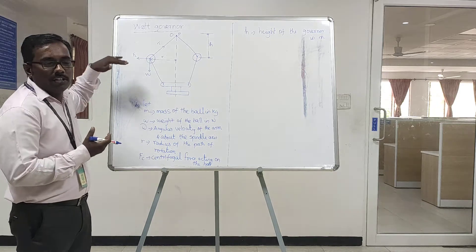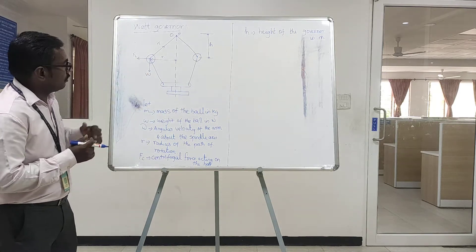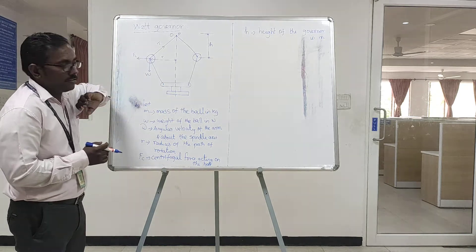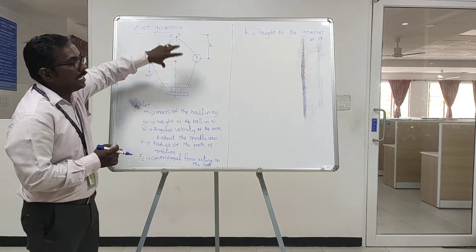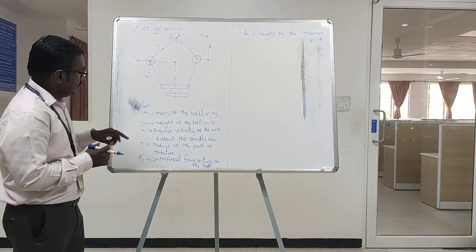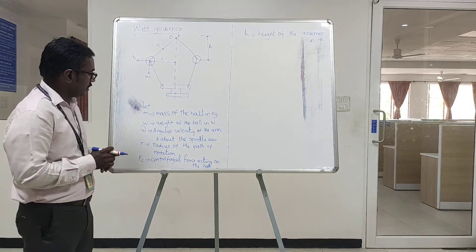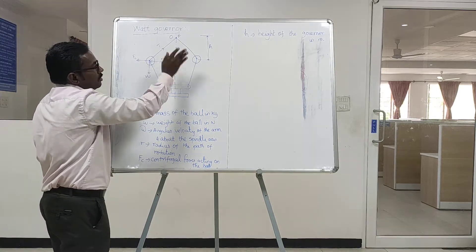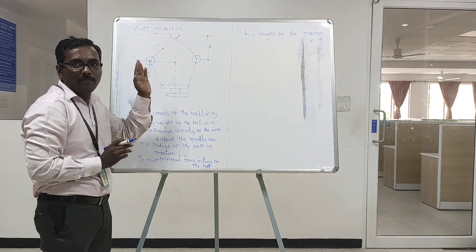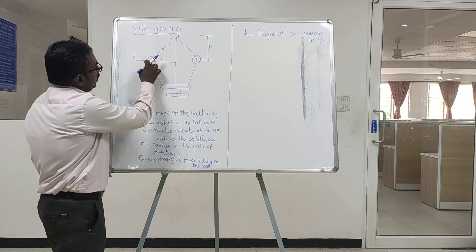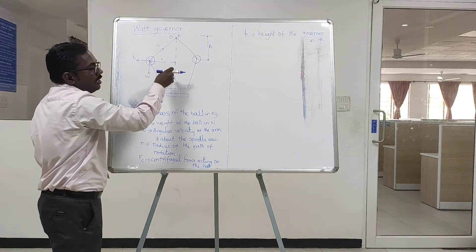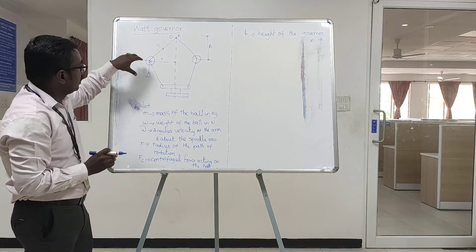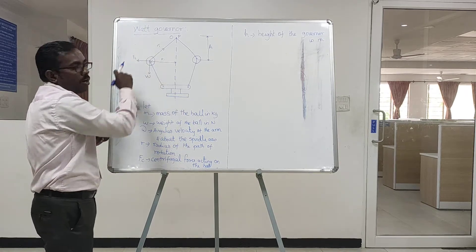So now we can derive the height of the Watt governor. First, let us assume small m as the mass of the ball in kg. Then the upper and lower links and arms of the Watt governor. Then W is the weight of the governor ball in Newton. Then omega is the angular velocity of the arm about the axis. R is the radius, which is the distance between the axis of the arm and the center of the ball. Fc is the centrifugal force which acts on the ball.